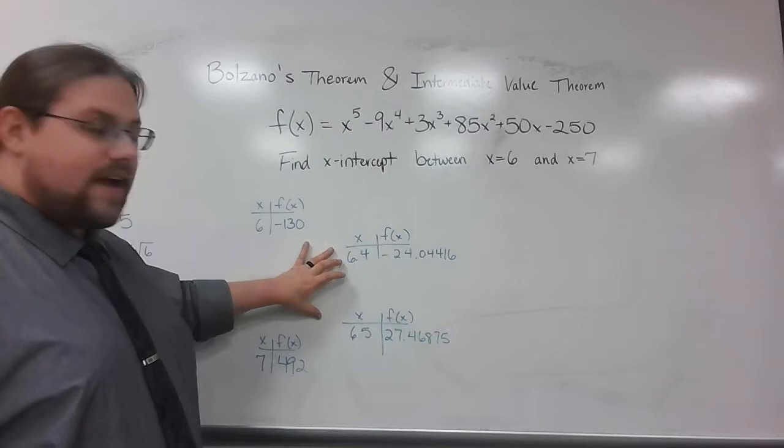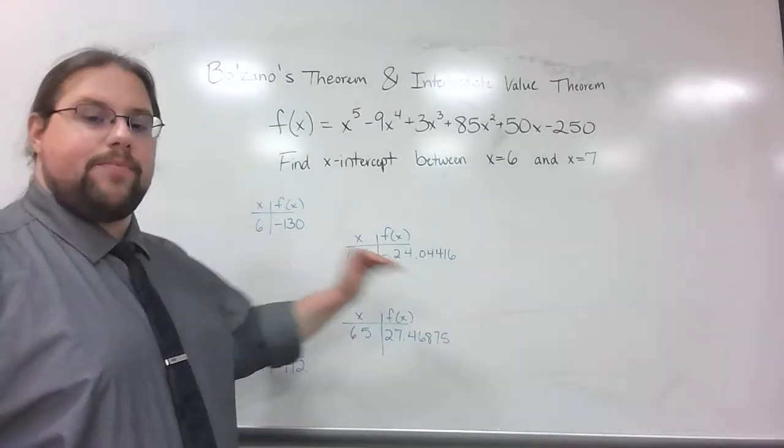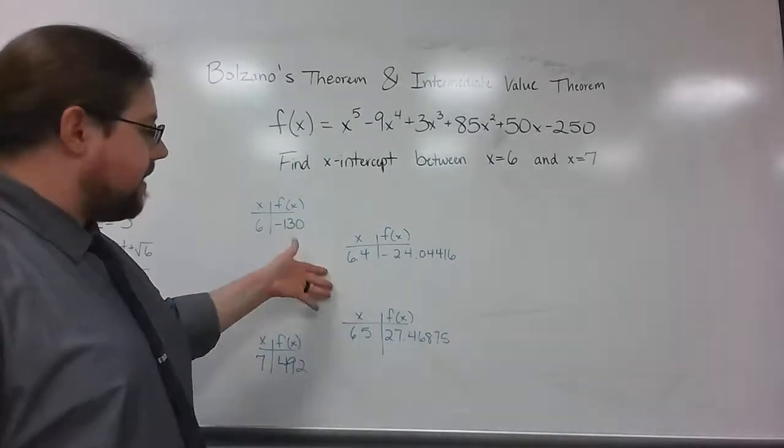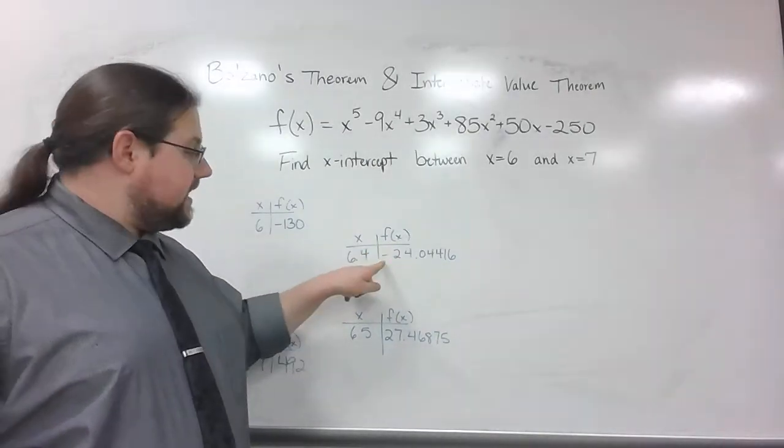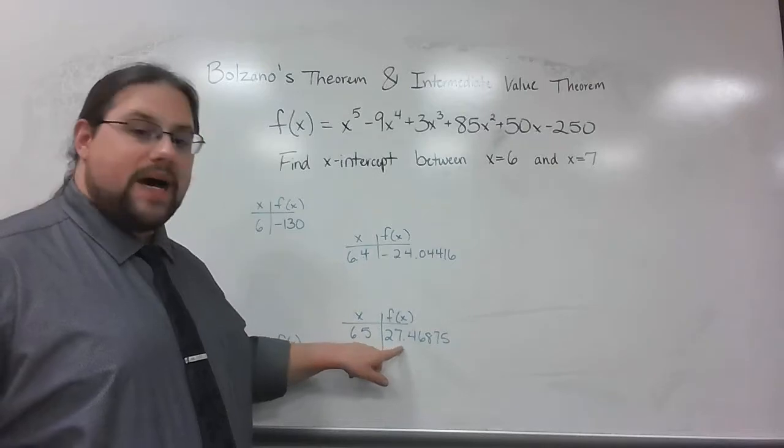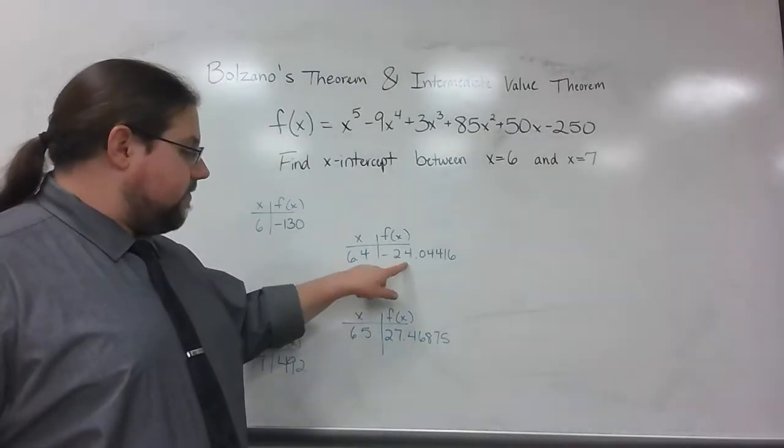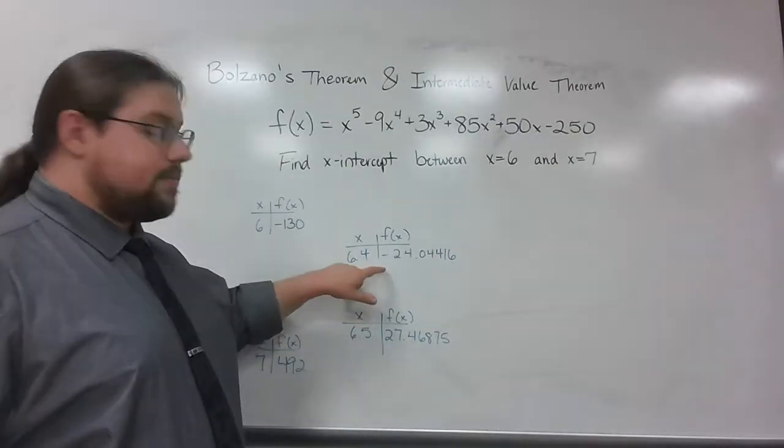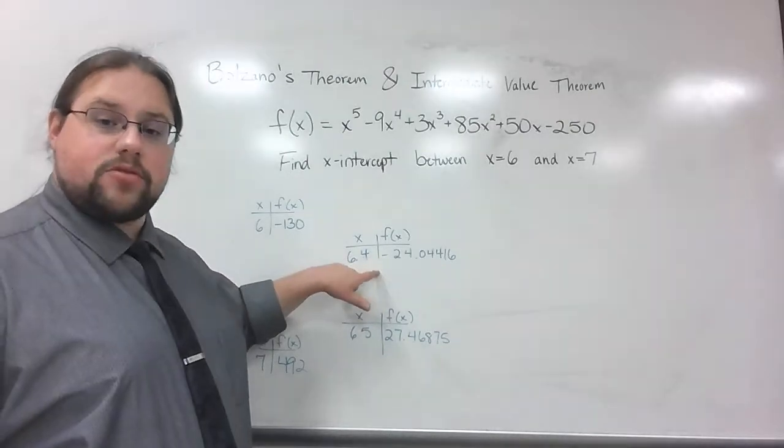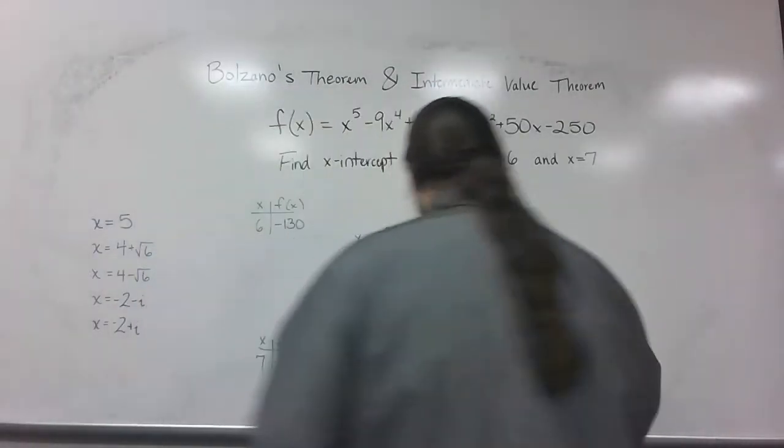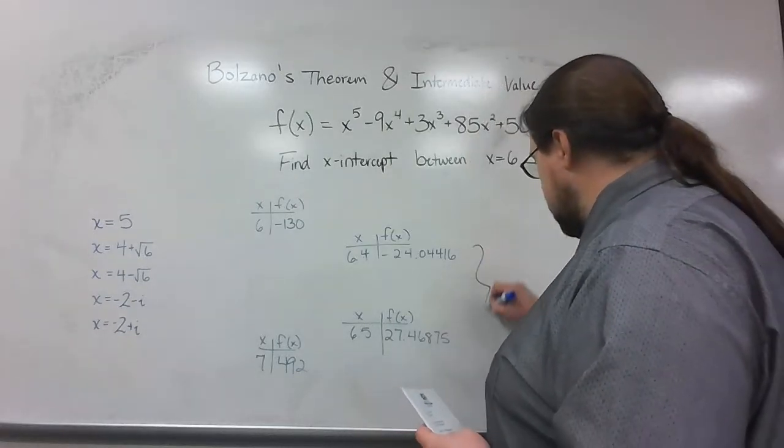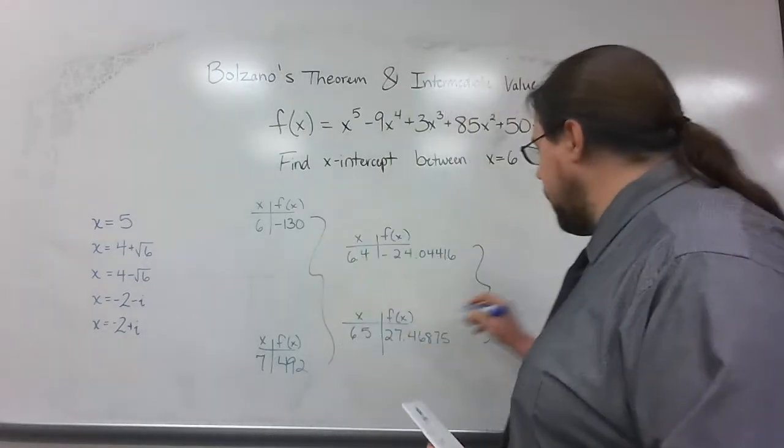Once I've got a positive number and a negative number, I can keep going. Now, if it only asked me for one decimal place, I'd probably look at it here and say, negative 6.4 is closer to 0 because it gives me negative 24 as opposed to positive 27. Negative 24 is closer than 27. So I would probably say 6.4 is going to be closer. So let me try numbers close to 6.4. So I tried, in this case, 6.44.